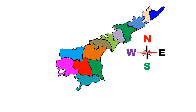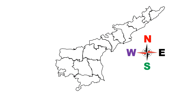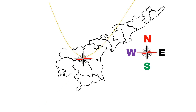Borders of Andhra Pradesh: how can we identify the borders of our state? What is East, what is West, what is North, and what is South? Which places are located in the four directions? Now we stand in front of the AP map. Our right-hand side is East direction, left-hand side is West direction, the top part is North direction, and the bottom part is South direction. This is how we identify the four directions of a map.